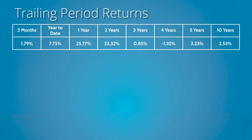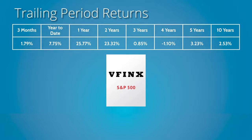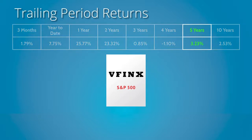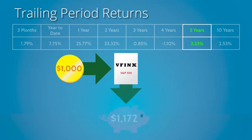Let's look at the example we used in the previous video — the returns of the Vanguard S&P 500 for the periods ending May 31, 2011. Looking specifically at the trailing five-year return of 3.23%, a $1,000 investment made on June 1, 2006 would have grown to $1,172 over that five-year period.